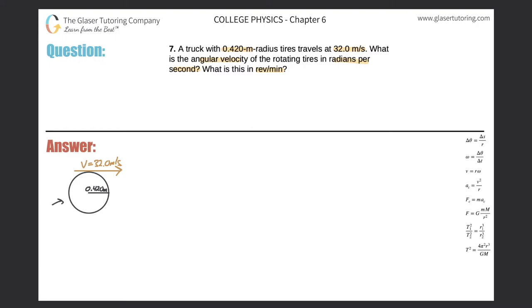The tire has a radius of 0.42 meters. It also says that the truck is moving with a velocity of 32 meters per second. Now that velocity of the truck is also equal to the linear velocity or the tangential velocity at any point on this tire that is rotating, so they are equal in value.